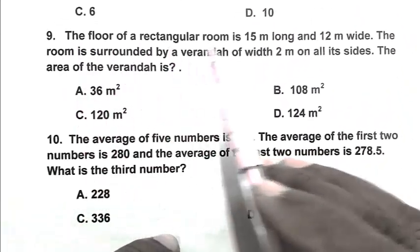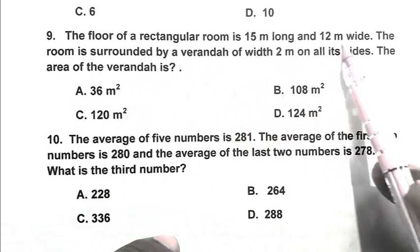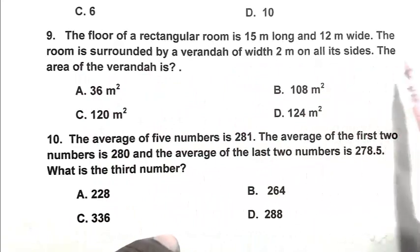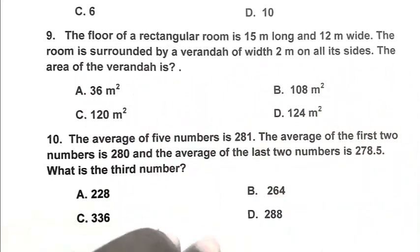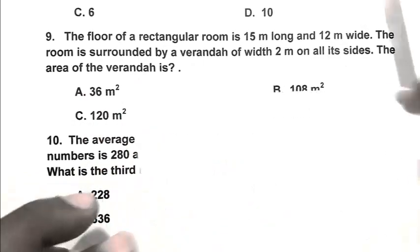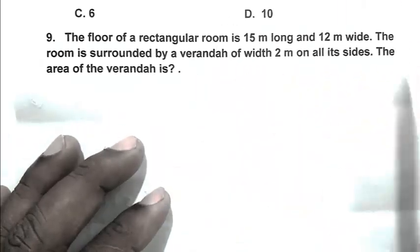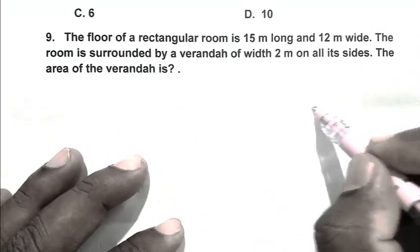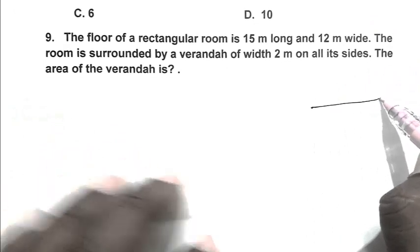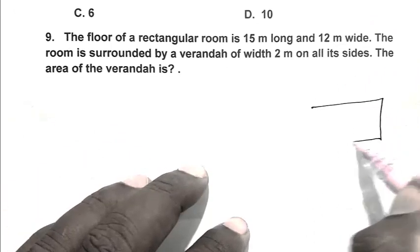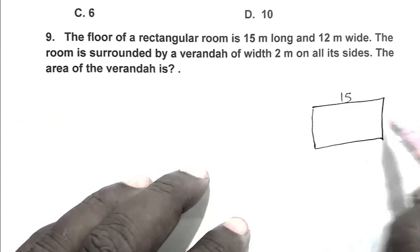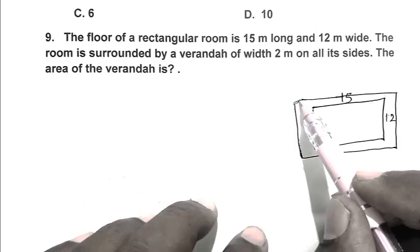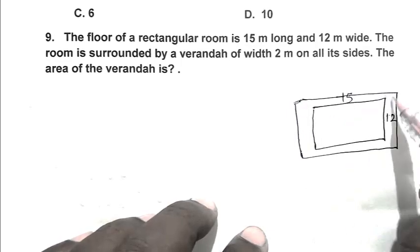Question number 9. The floor of a rectangular room is 15 meter long and 12 meter wide. The room is surrounded by a verandah of width 2 meter on all its sides. The area of the verandah is. So friend, the length of the verandah including room becomes 19 meter.